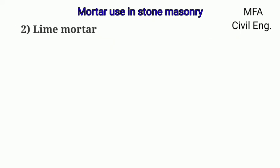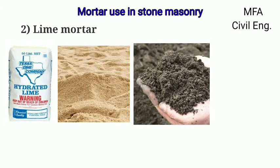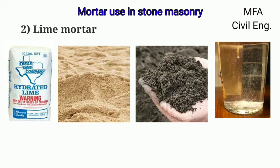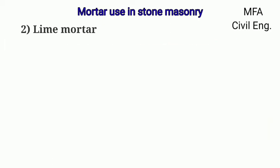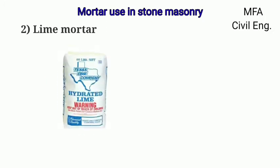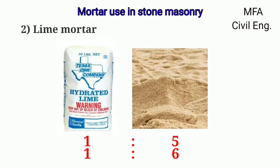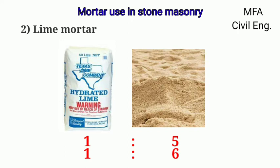The paste prepared by mixing lime, sand or surkhi, and water in a suitable proportion is called lime mortar. In lime mortar, the general proportion of lime and sand for stone masonry varies from 1:5 to 1:6 — that is, one part of lime and 5 to 6 parts of clean sand or surkhi.